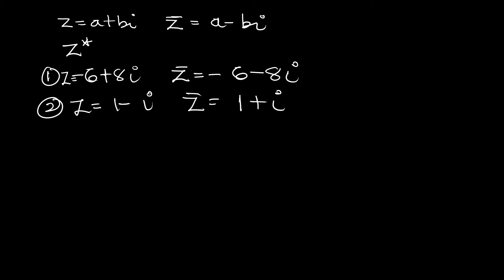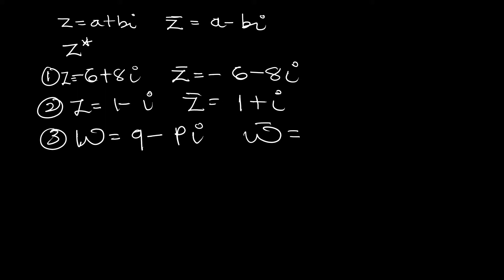Let's take another example: omega equals k minus pi i. Omega-bar is simply going to be k plus pi i. So that is the conjugate — all you have to do is negate the imaginary part and you are good to go. Let's move on to the division of complex numbers.